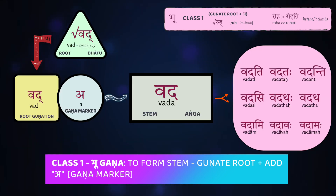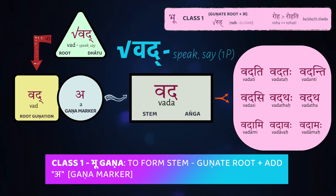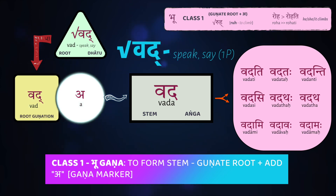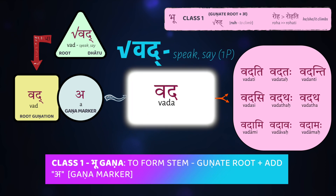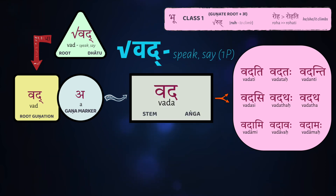Here's a very simple example: the root vad, meaning 'to speak or say.' The guṇa of 'a' in vad is going to be 'a', so the guṇated form of the root stays vad — no change. Then you add an 'a', and so your stem is now vada. And that's it.